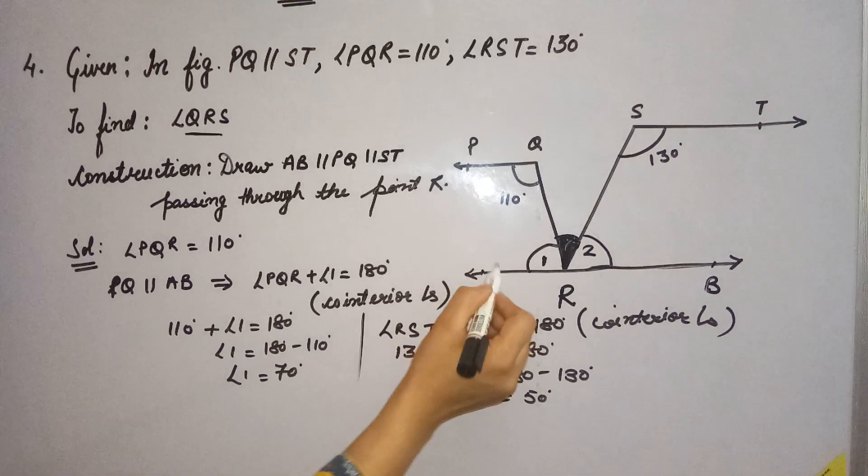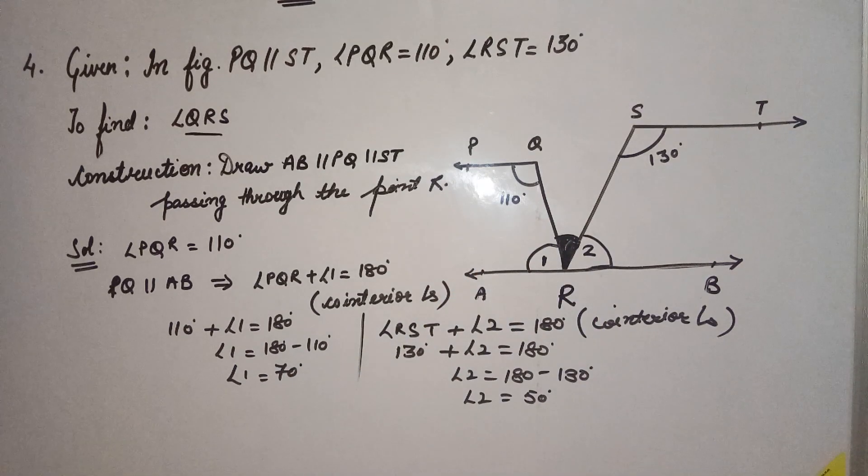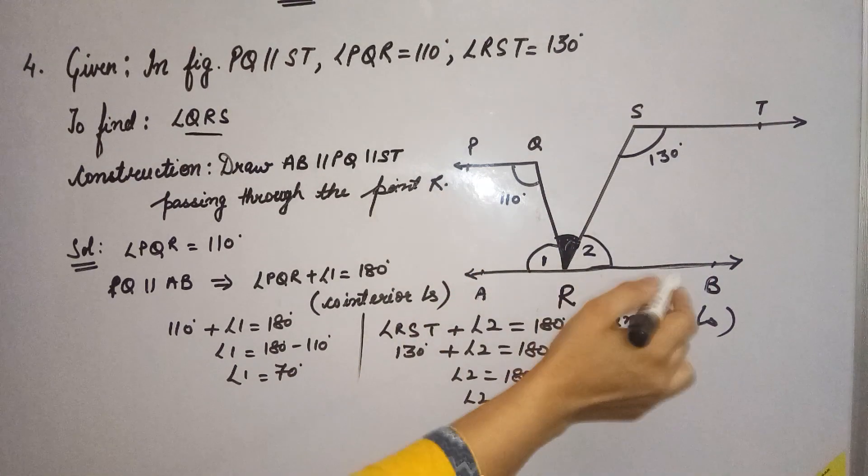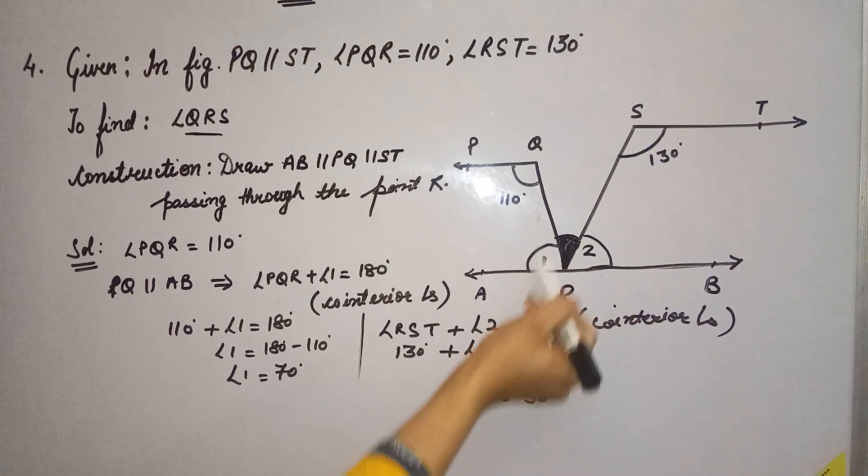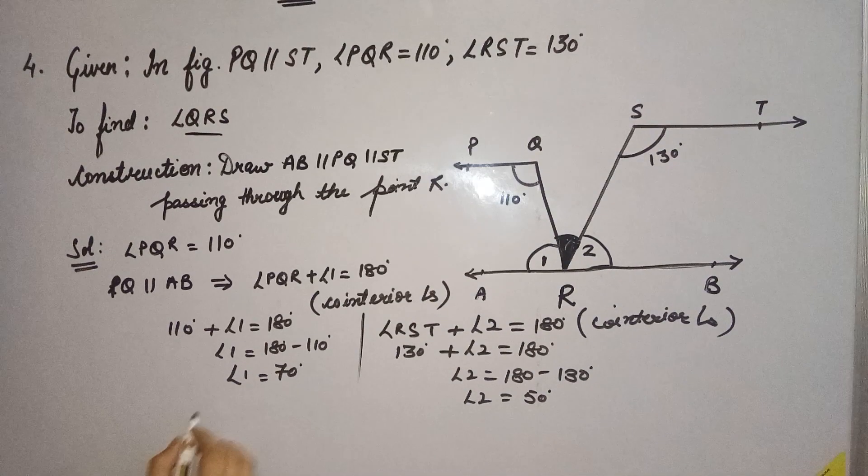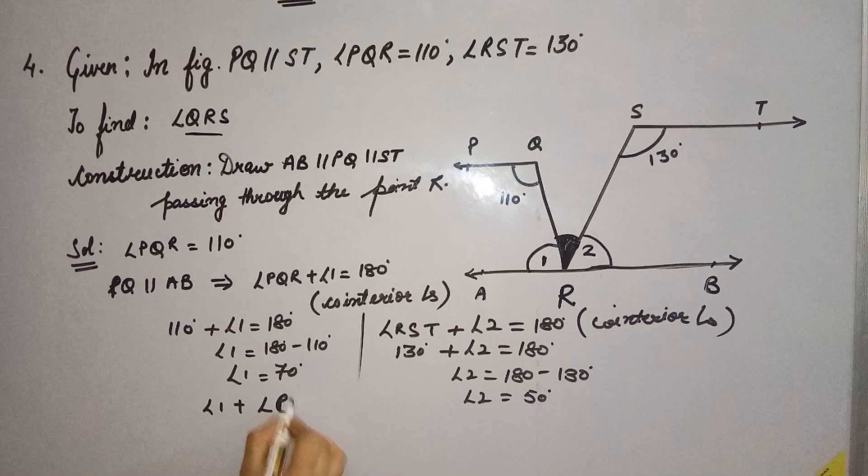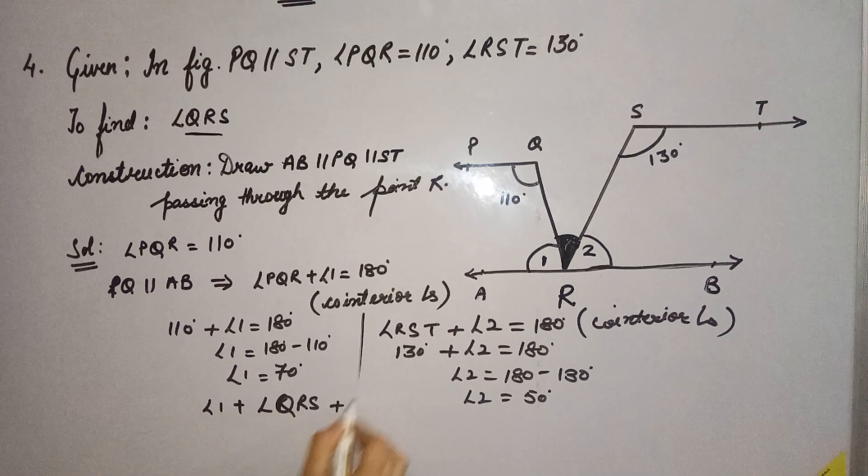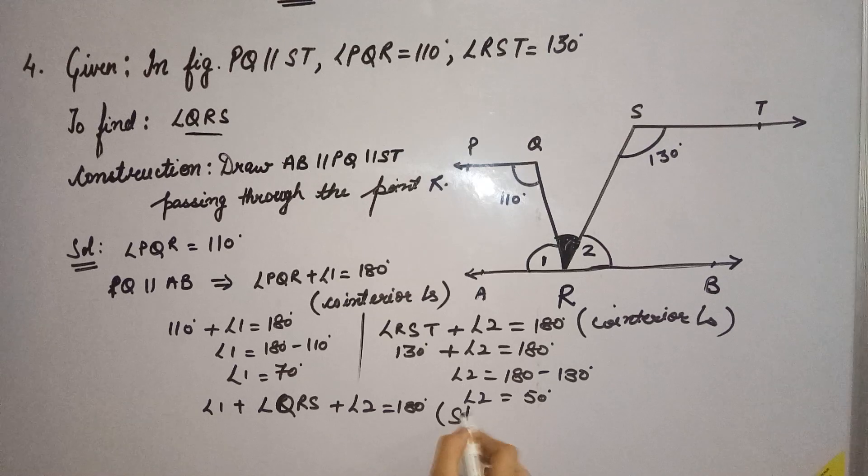So angle 1 plus angle QRS plus angle 2 are on the same line, forming a straight angle. Their sum is 180 degrees. So angle 1 plus angle QRS plus angle 2 equals 180 degrees, straight angle.